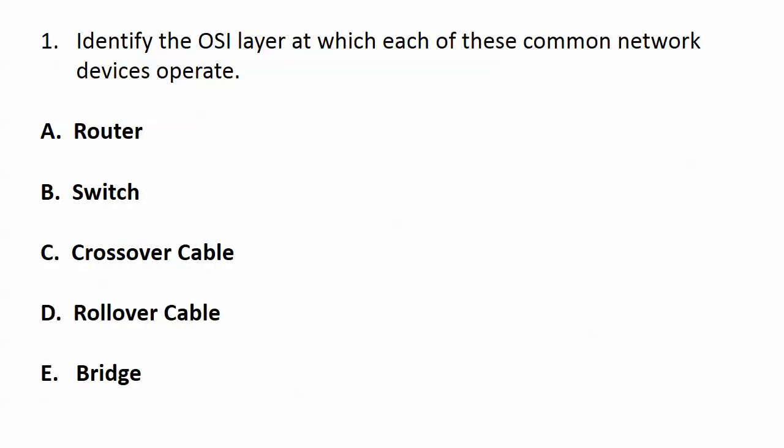Let's go over the answers. For question one: a router runs at layer three, the network layer. A switch runs at the data link layer, which is layer two. The cables — both crossover and rollover — are physical, running at layer one. And the bridge, which you don't see too often anymore, also runs at layer two. So top to bottom, the layers are 3, 2, 1, 1, 2.